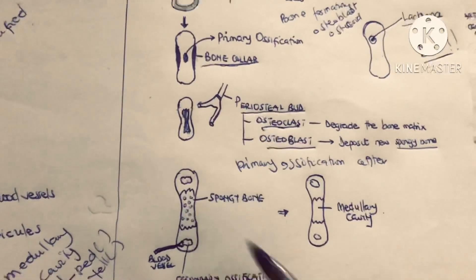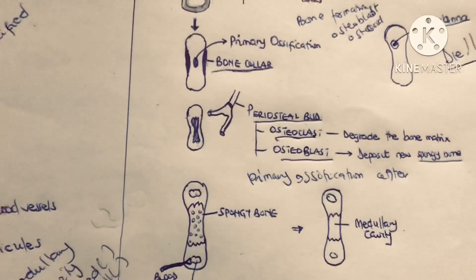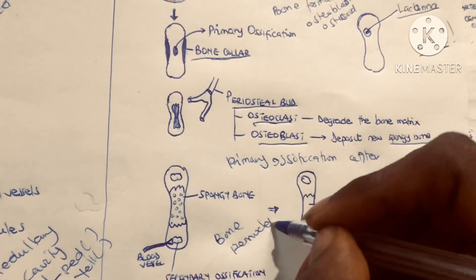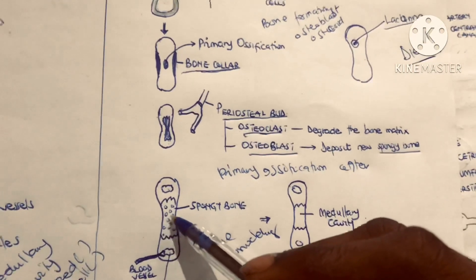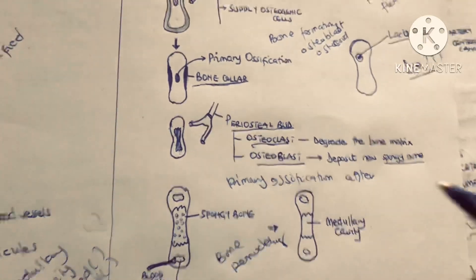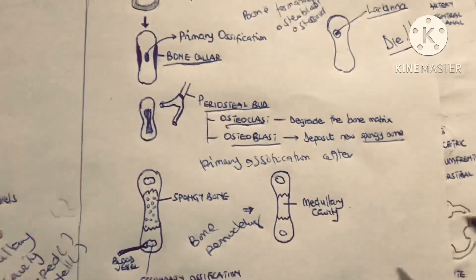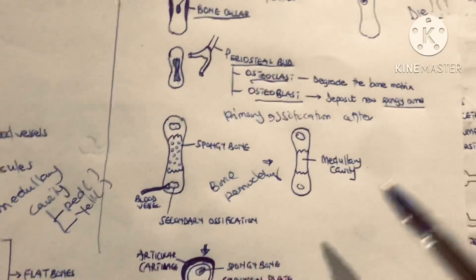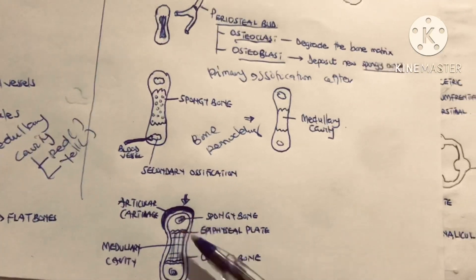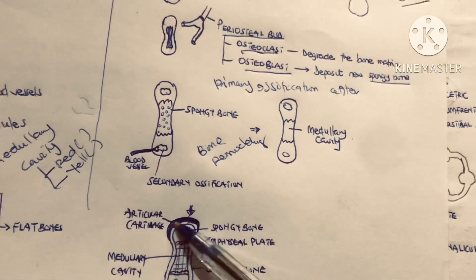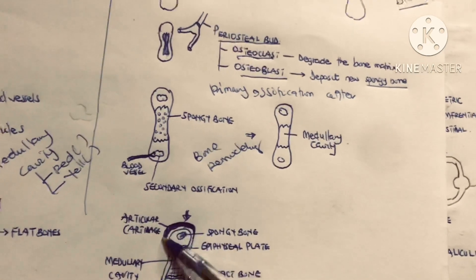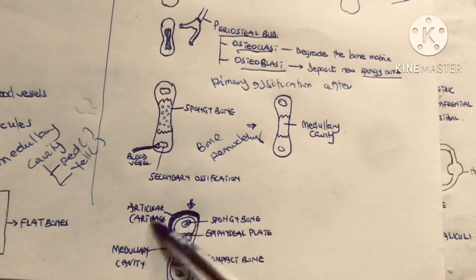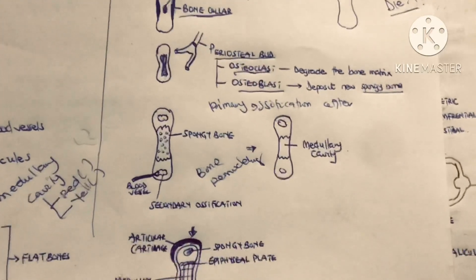During bone remodeling, the spongy bone sites can be replaced by a medullary cavity, which houses yellow or red bone marrow. The only place that remains as cartilage is the covering of the epiphysis called the articular cartilage — it will remain cartilage. That is endochondral ossification.